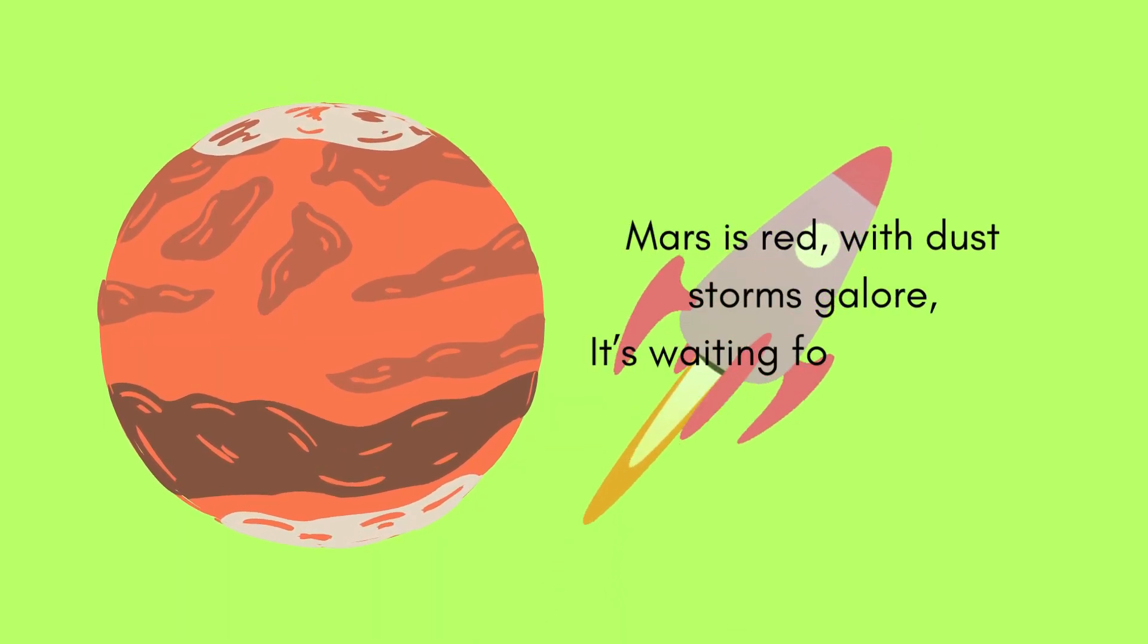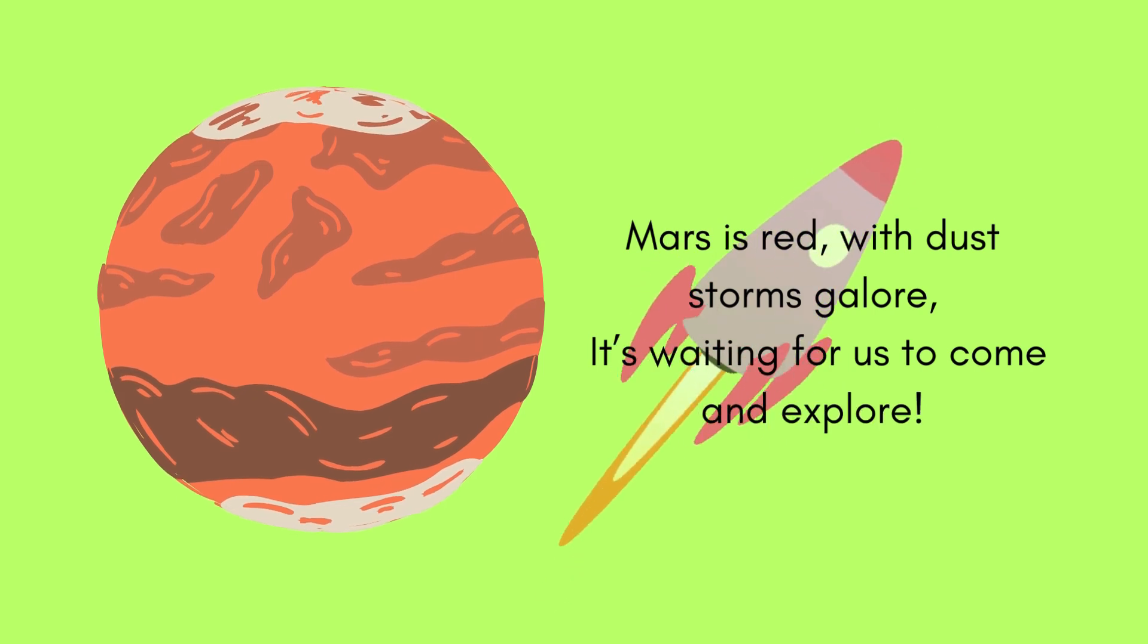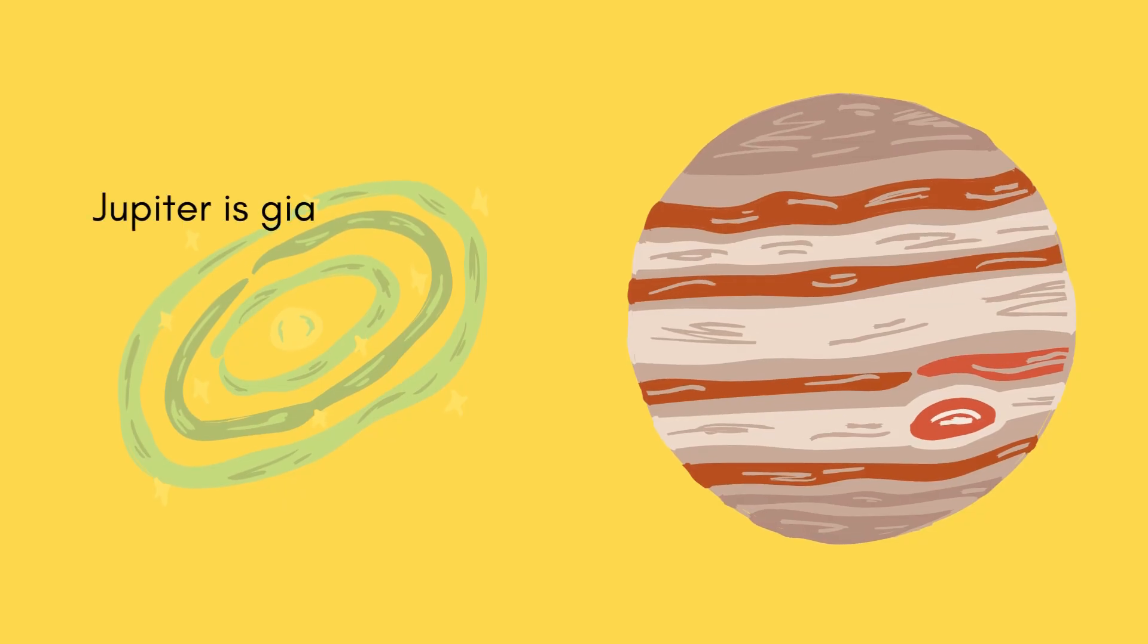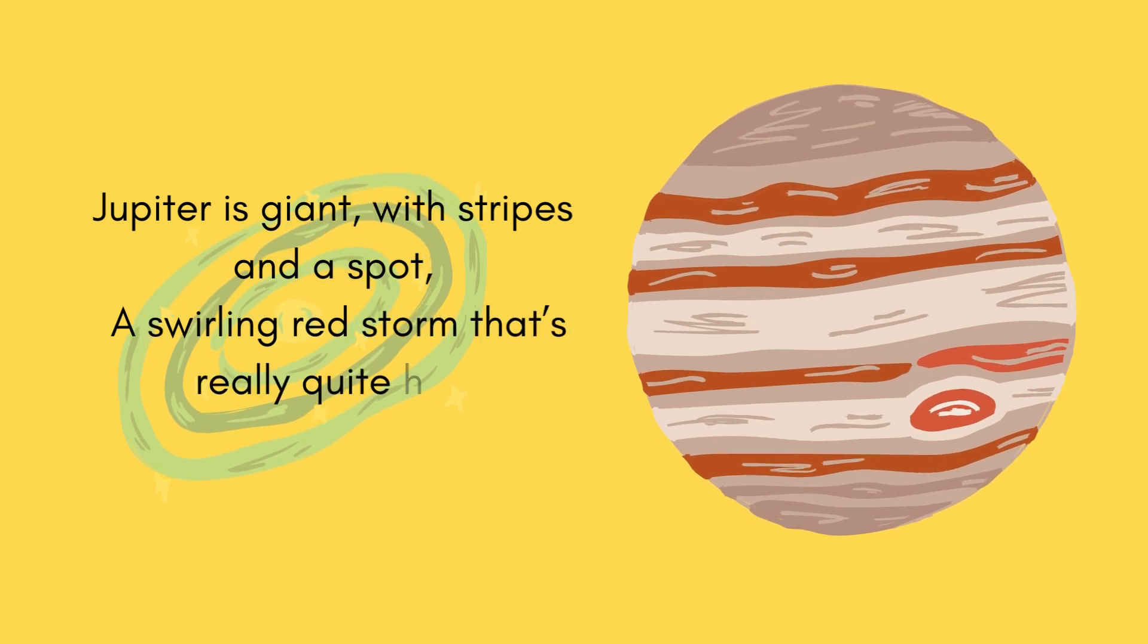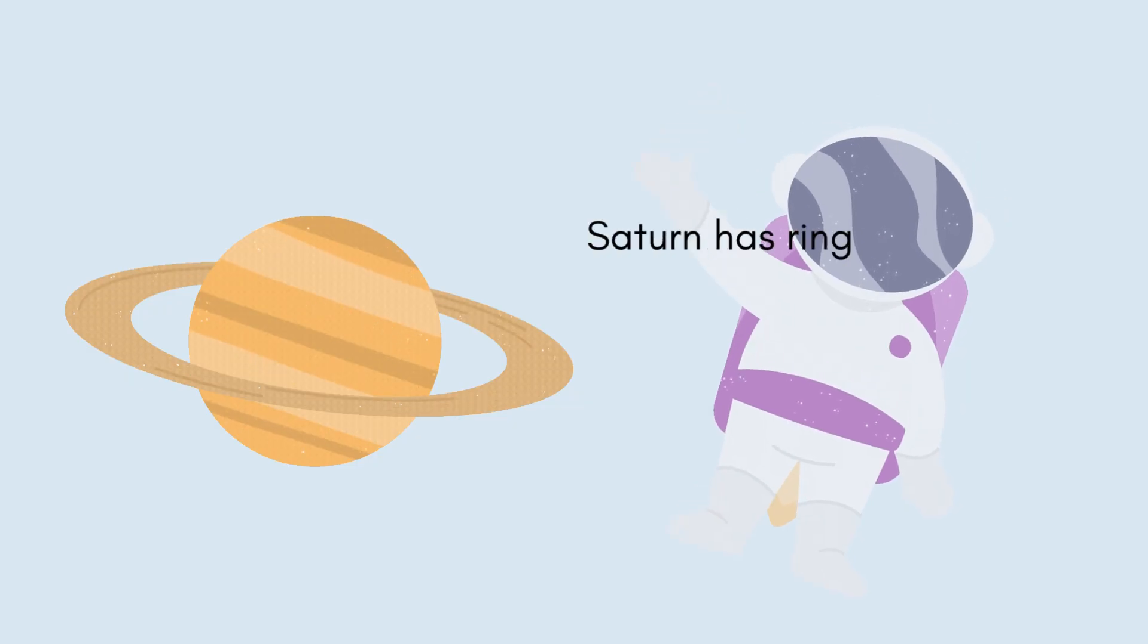with dust storms galore. It's waiting for us to come and explore. Jupiter is giant, with stripes and a spot. A swirling red storm that's really quite hot. Saturn has rings so shiny and white,